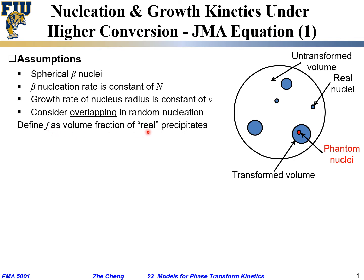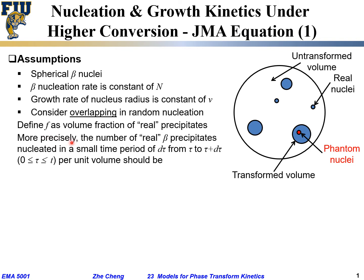Phantom nuclei are those that try to form within an already-transformed volume — they are not real. With that in mind, let's define f as the volume fraction of real precipitate: the ratio of transformed volume to total initial volume. The number of real beta precipitate nuclei formed in a small time increment dτ — from τ to τ + dτ — per unit volume is dN_r, and equals the nucleation rate N times dτ times (1 − f).